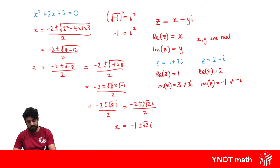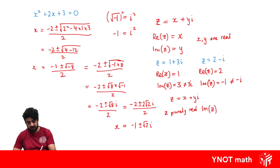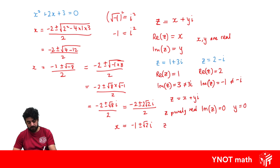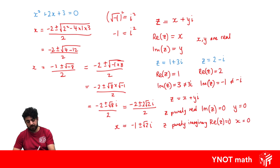Also, if z is a complex number in the form x plus yi, z would be purely real if the imaginary part of z equals 0, which means y would have to equal 0. And z would be purely imaginary if the real part of z equals 0, in which case x would have to equal 0.